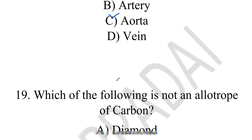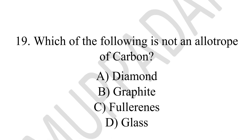The nineteenth question: which of the following is not an allotrope of carbon? The answer is option D, glass.